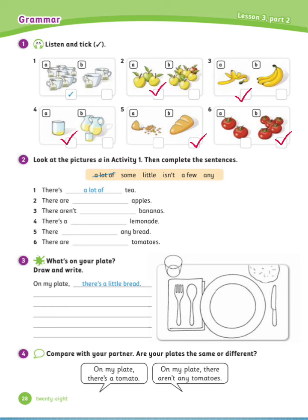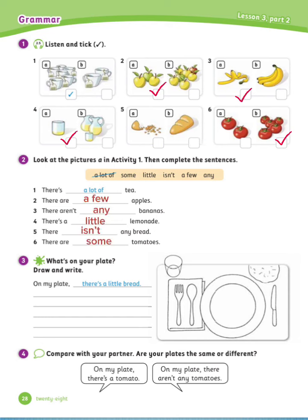Exercise number 2: Look at the pictures in Activity 1, then complete the sentences. Use the words in the box above to complete the sentences. Let's see the answers. Number 1 is done for you: There is a lot of tea.